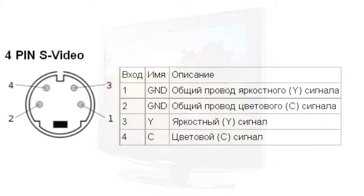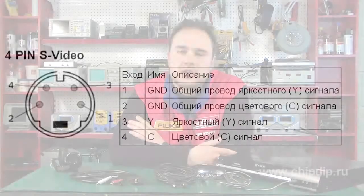In modern computer video adapters, several versions of S-video connectors with different quantities of contacts may be used. This allows you not only to have both video signal output and input in a video adapter, but also to output a composite signal.